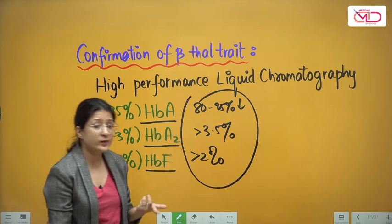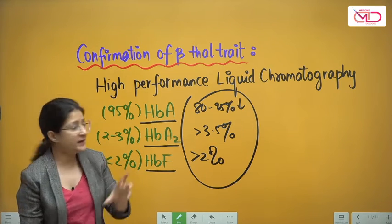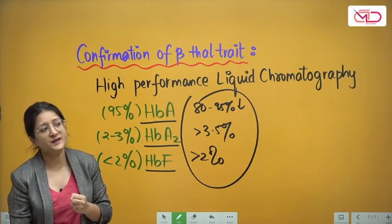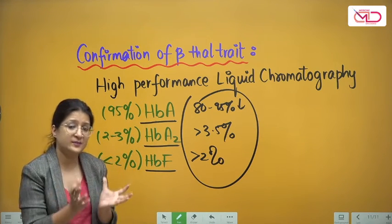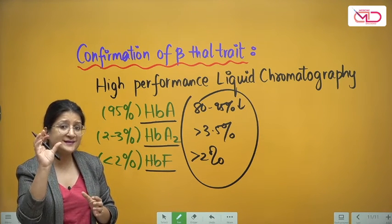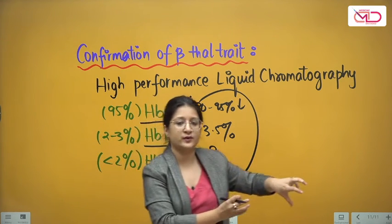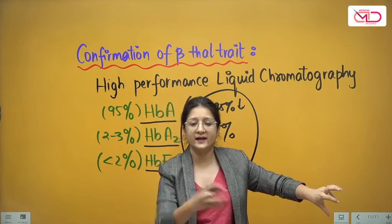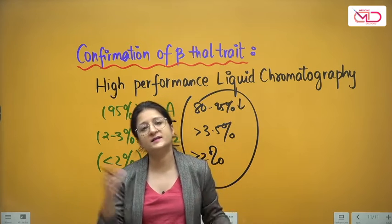How do we manage the anemia of thal trait? Oral iron can be given in the face of coexistent iron deficiency. The cause of anemia in thal trait is ineffective erythropoiesis and some extravascular hemolysis, so the lifespan of RBCs is decreased. RBCs are formed and quickly destroyed, more are formed quickly — there is a rapid turnover of RBCs in circulation.